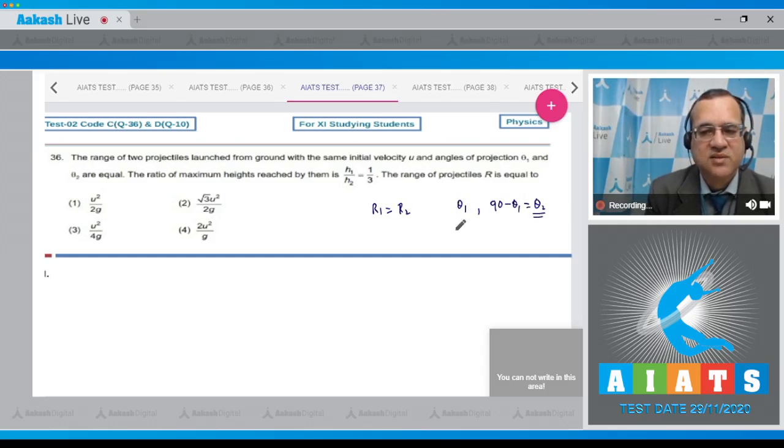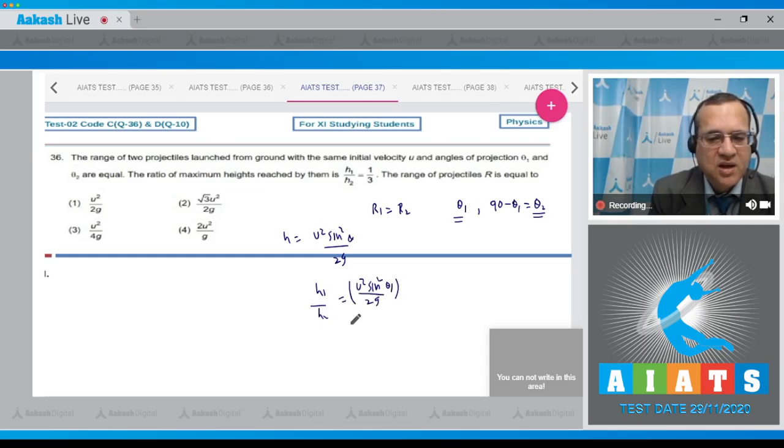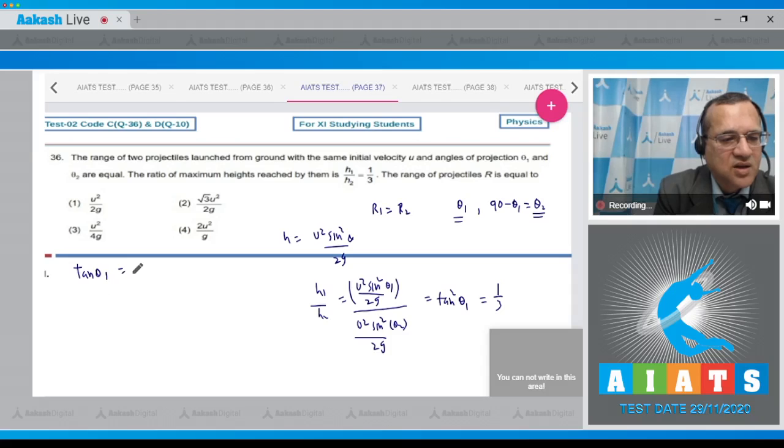These are two angles and maximum height formula h is equal to u square sine square theta divided by 2g. Therefore h1 by h2 will be equal to u square sine square theta 1 divided by 2g and u square sine square theta 2 divided by 2g. If theta 2 equals 90 minus theta 1, this comes to be tan square theta 1, which is given equal to 1 by 3. Therefore tan of theta 1 is equal to 1 by root 3.